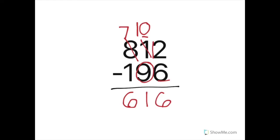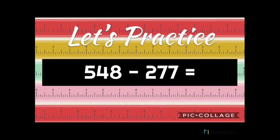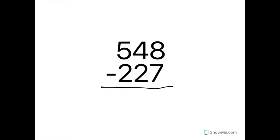One more: 548 minus 277. In the ones place — more on top, no need to stop — eight minus seven is one. In the tens place, four minus seven — wait, let me start in the ones place: eight minus seven is one. Then the tens: four minus two, more on top, no need to stop, that's two. Hundreds: five minus two, more on top, no need to stop, that's three. So 548 minus 277 equals 271.